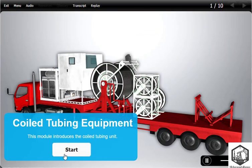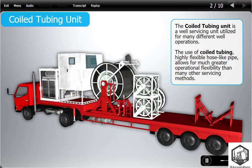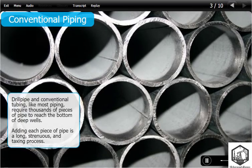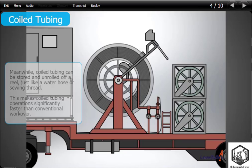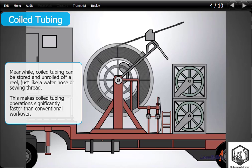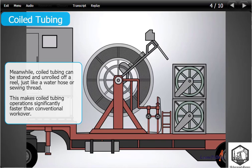This module introduces the coiled tubing unit. The coiled tubing unit is a well servicing unit utilized for many different well operations. The use of coiled tubing — a highly flexible, hose-like pipe — allows for much greater operational flexibility than many other servicing methods. Drill pipe and conventional tubing require thousands of pieces of pipe to reach the bottom of deep wells, and adding each piece is a long, strenuous, and taxing process. Meanwhile, coiled tubing can be stored and unrolled off a reel, just like a water hose or sewing thread, making coiled tubing operations significantly faster than conventional workover.